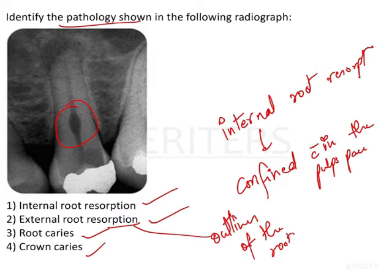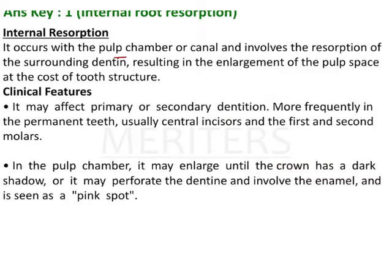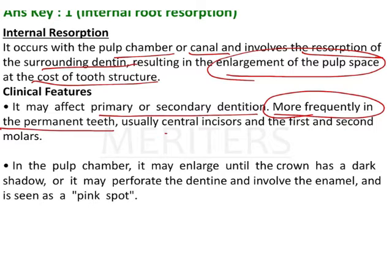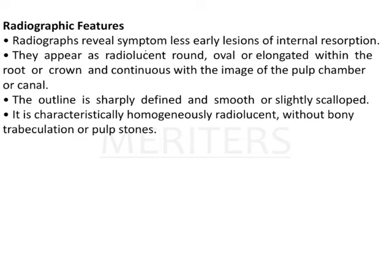Internal root resorption occurs within the pulp chamber or pulp canal and involves resorption of the surrounding dentin, resulting in enlargement of the pulp space at the cost of tooth structure. It may affect both secondary and primary dentitions but is more frequently found in permanent teeth, usually central incisors and first and second molars. The pulp chamber may enlarge until the crown shows a dark shadow, or it may perforate the dentin and involve the enamel, seen as a pink spot.